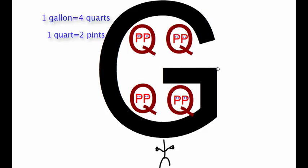Now, how many pints are there in a gallon? Well, if you look at it, you can see that there's two, four, six, eight, there's eight pints in a gallon. So a quart is smaller than a gallon, but a pint is smaller than a quart.